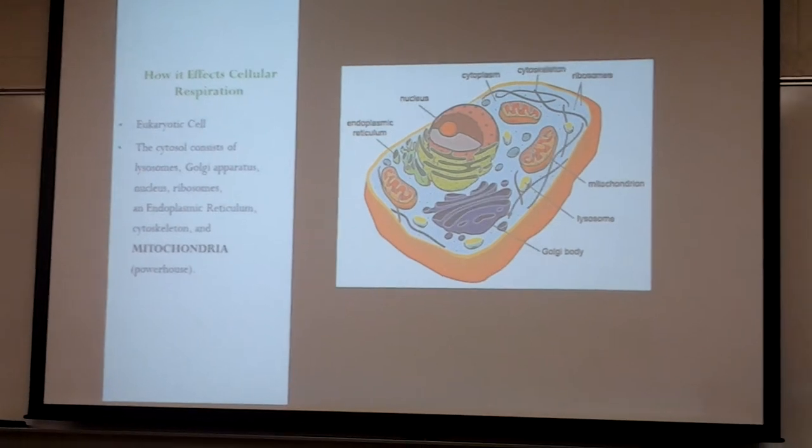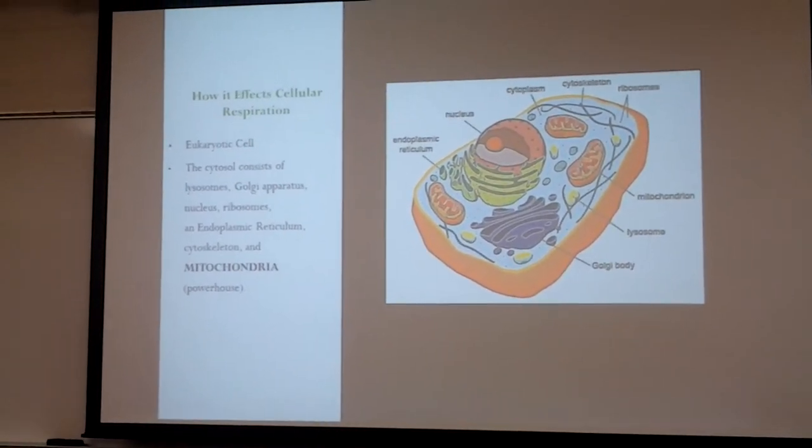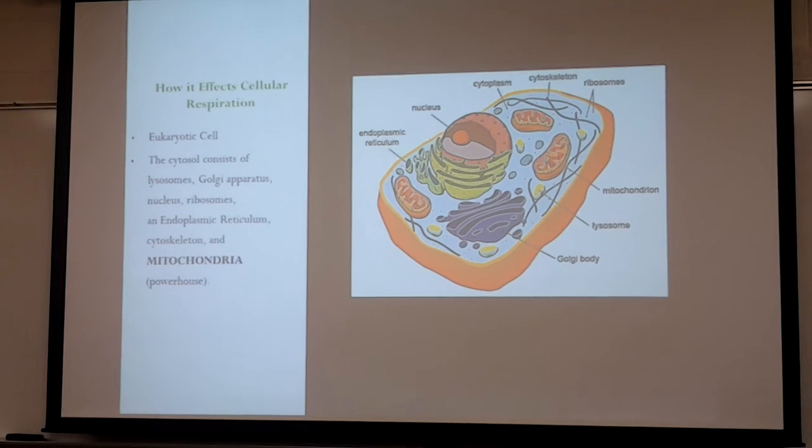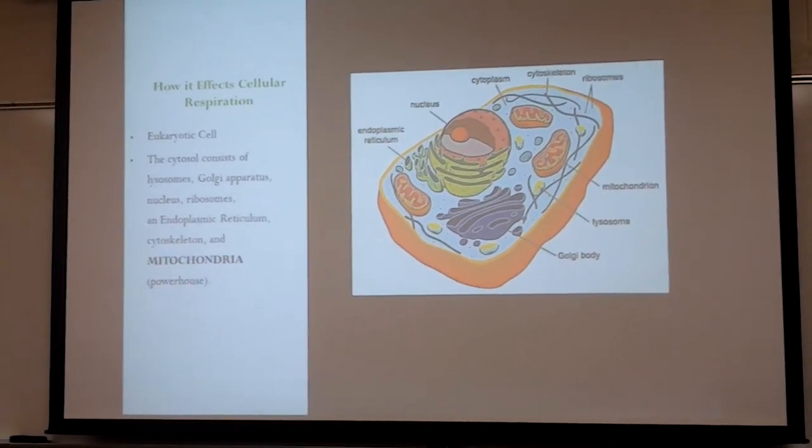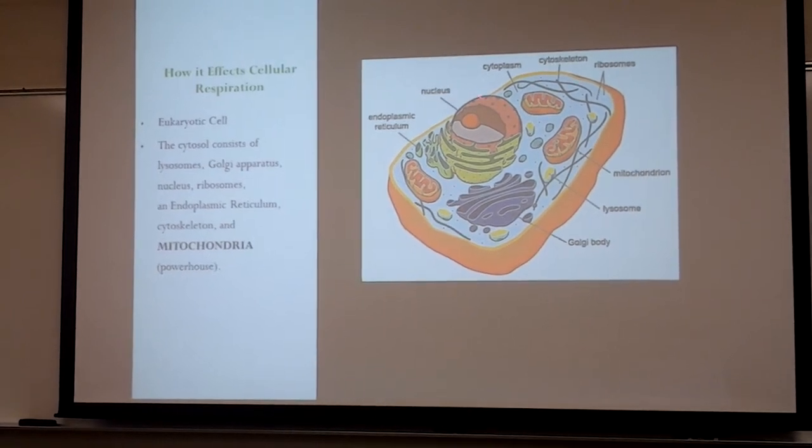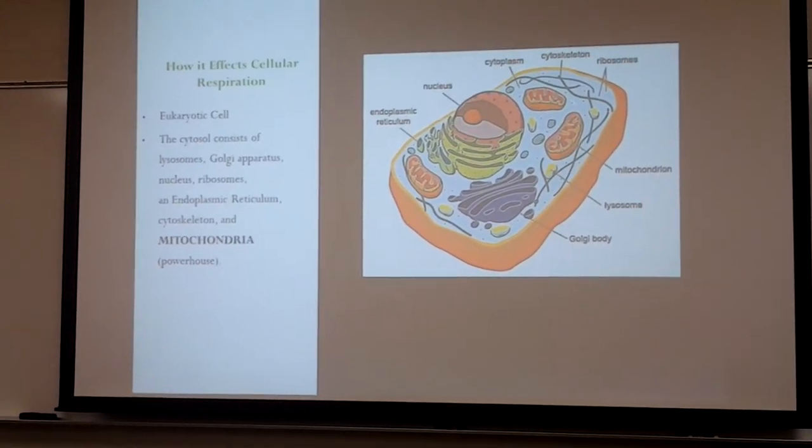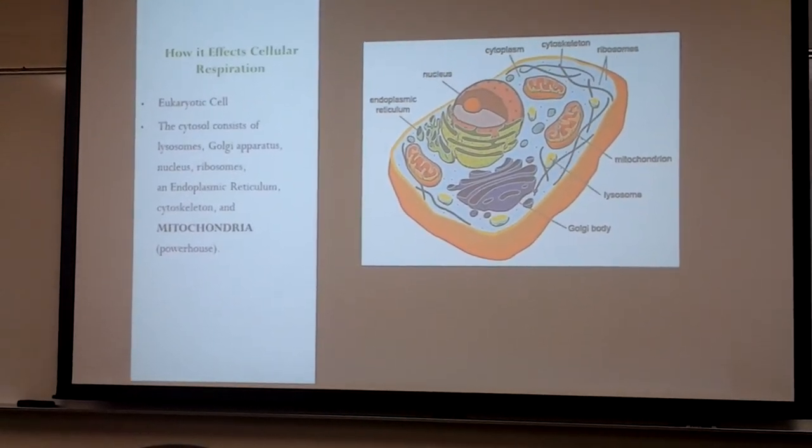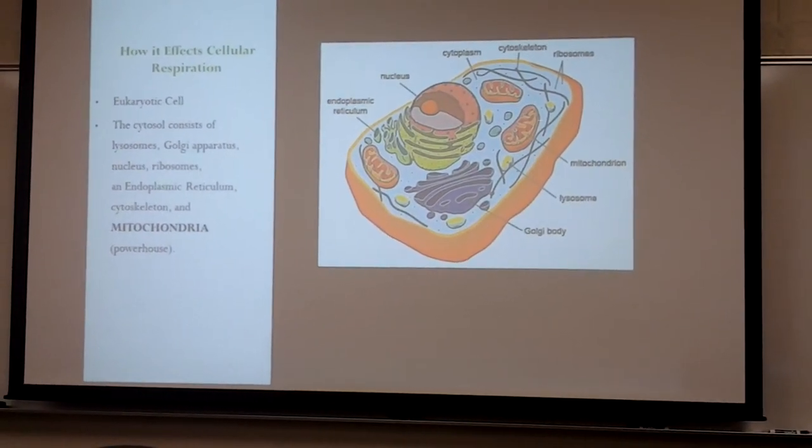When focusing on a eukaryotic cell shown in the figure to the right, we notice that it has various organelles consisting of an endoplasmic reticulum, a nucleus, cytoplasm, cytoskeleton, ribosomes, Golgi body, a lysosome, and a mitochondrion.